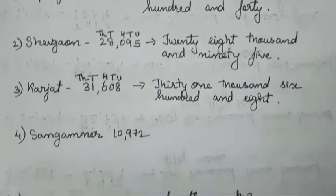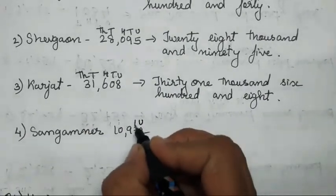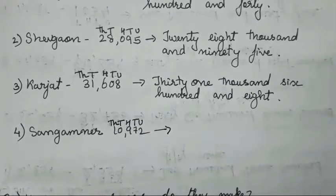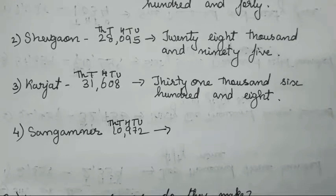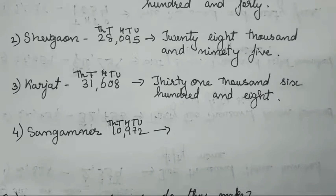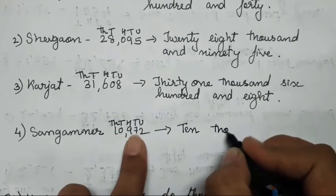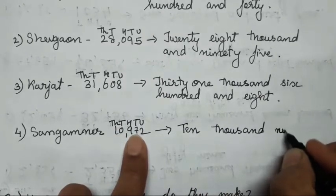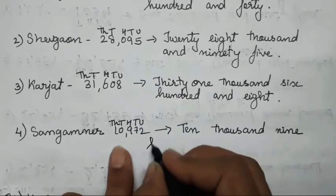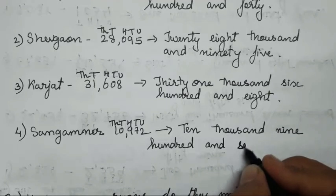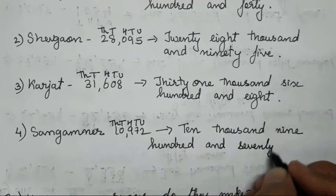Next is Sangamnir — unit, tens, hundred, thousand, ten thousand. Almost all five digit numbers have been given. You all have to write the number of thousands the way thousands have been written. So this is going to be ten thousand nine hundred and seventy two.